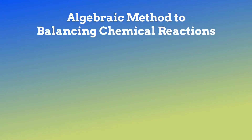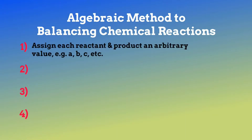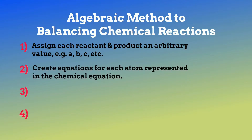We will use the algebraic method to figure out the coefficients for each product and reactant to balance our chemical reaction. There are four steps to using this method. First, we will assign each reactant and product an arbitrary variable, for example a, b, or c.